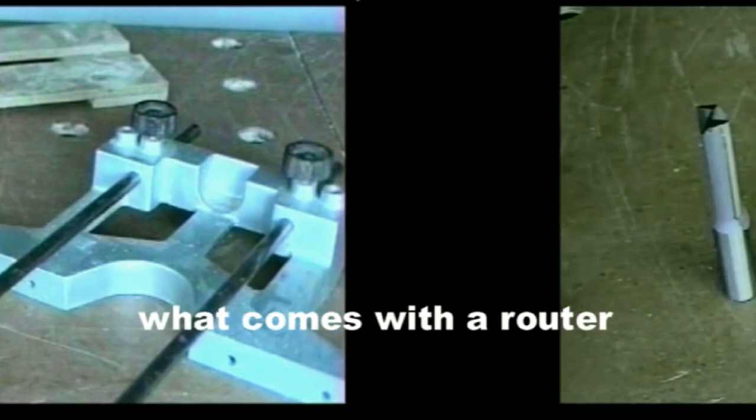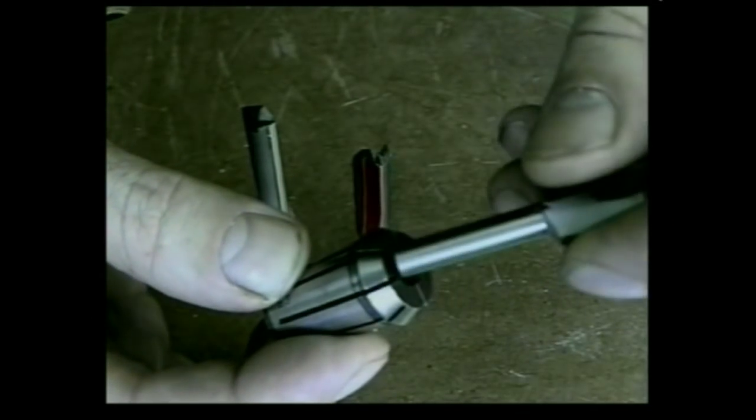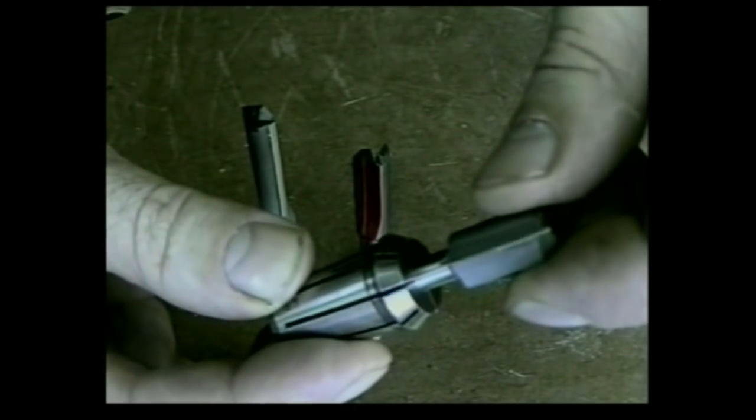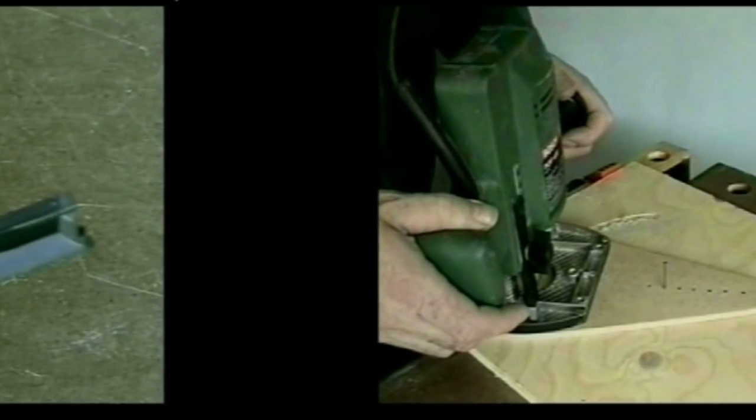If you own a medium or large router, it can still accept quarter inch shank cutters by using reduction sleeves or smaller collets.